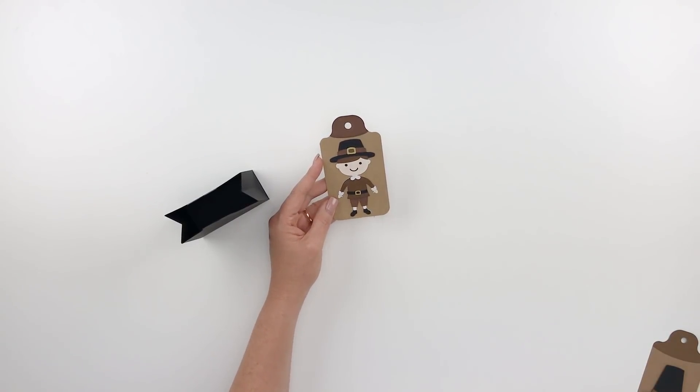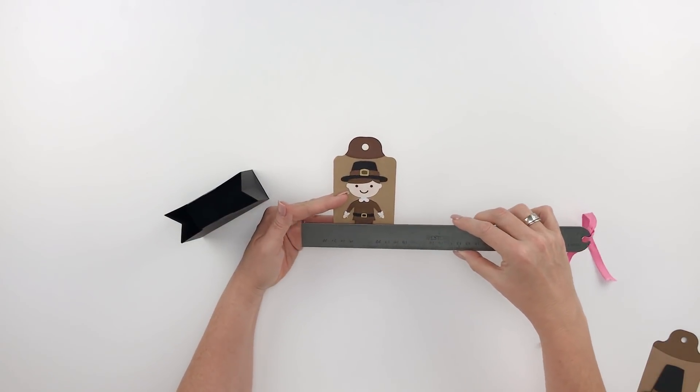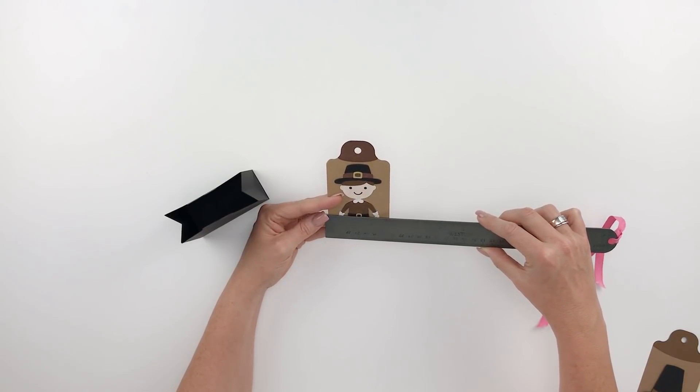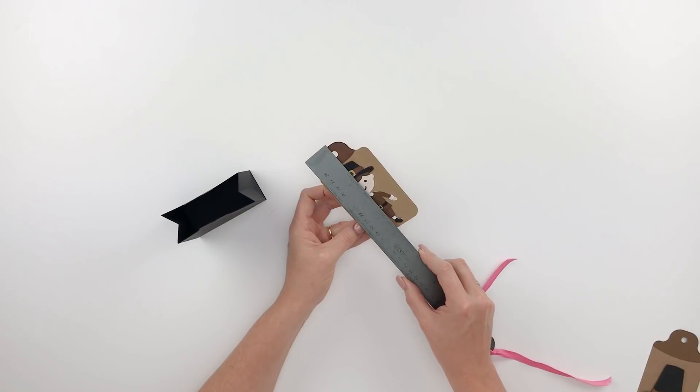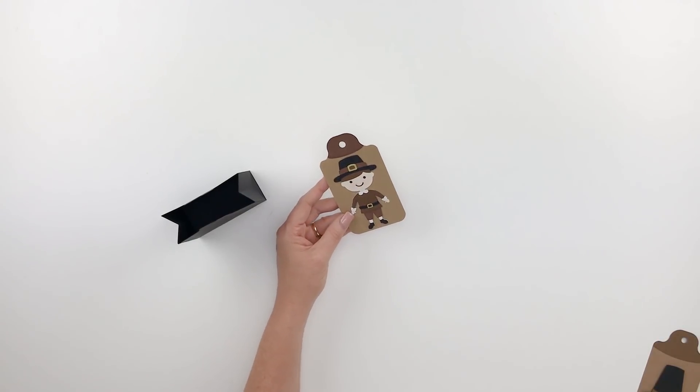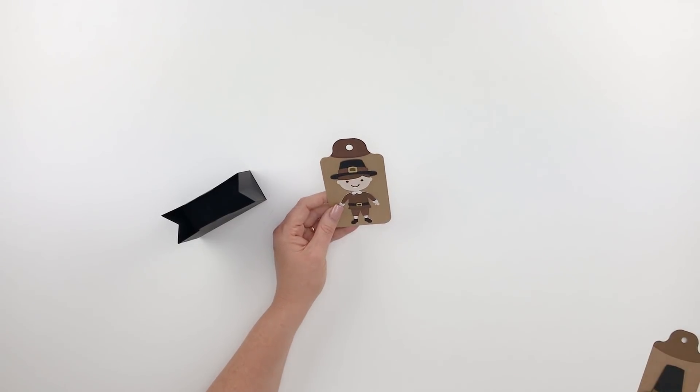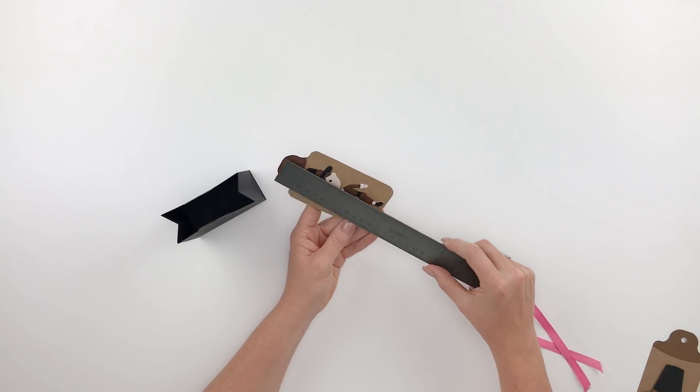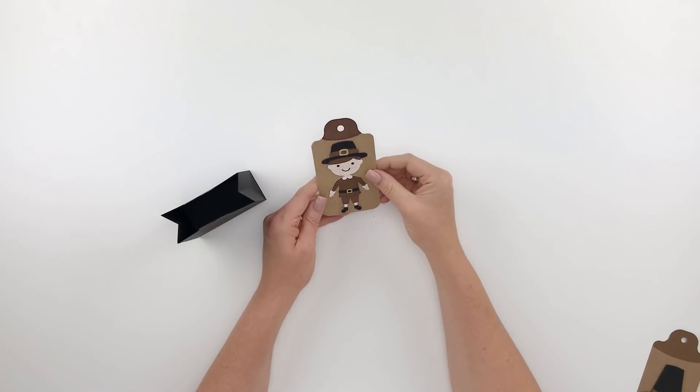This tag measures—let me give you a measurement on it real quick. It measures, this is the worst ruler, the numbers don't show very well, about a little less than three inches wide, so 2.75 by about five inches tall. So that's the size of the tag in the original file, yeah, five inches tall.